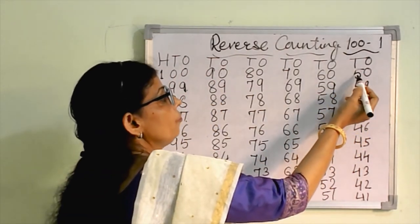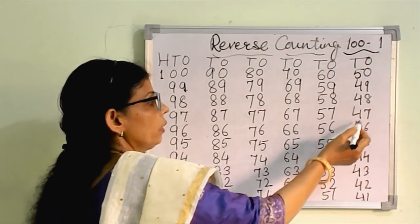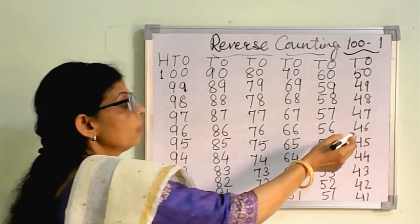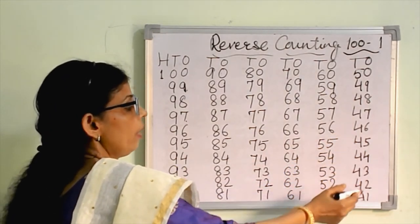You will write here fifty, and what comes before fifty? Forty-nine, less one, forty-eight, less one, forty-seven, less one, forty-six, forty-five, forty-four, forty-three, forty-two, and forty-one.